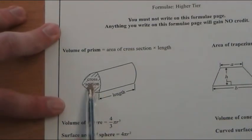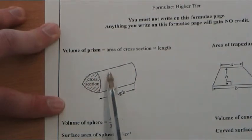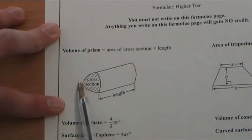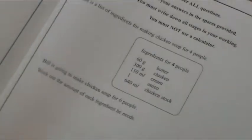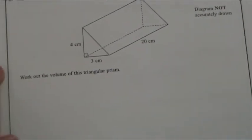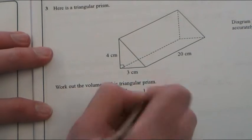The volume of any prism is the area of the cross section, the bit that is continuous all the way through our three-dimensional prism, multiplied by the length. So, it's the area of the cross section times the length.